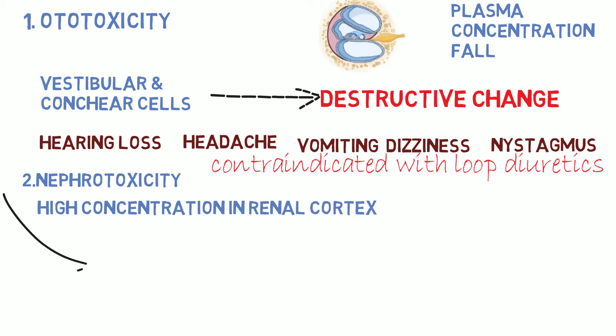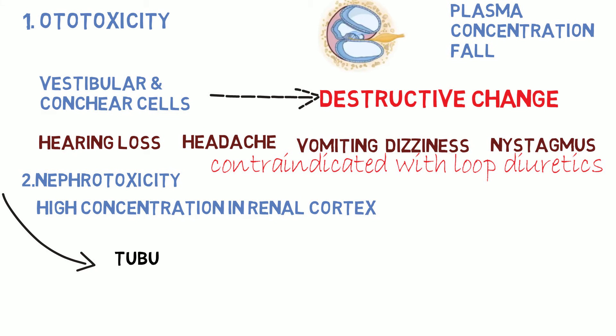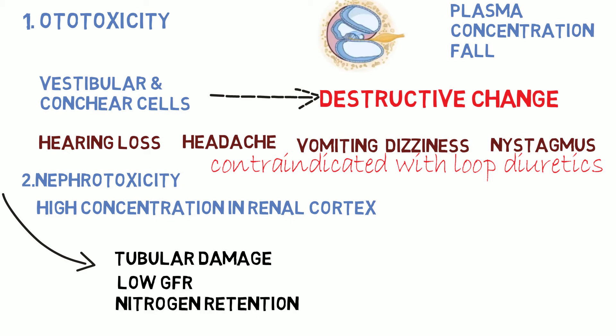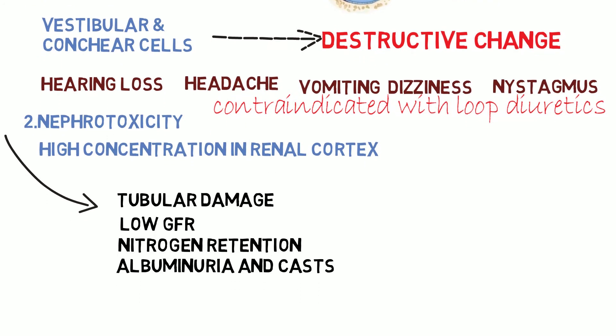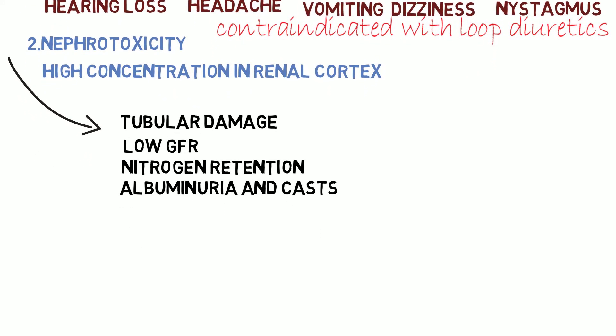The next adverse effect is nephrotoxicity. Aminoglycosides attain high concentration in the renal cortex, and nephrotoxicity is manifested as tubular damage resulting in loss of urinary concentrating power, low glomerular filtration rate, nitrogen retention, albuminuria, and casts.